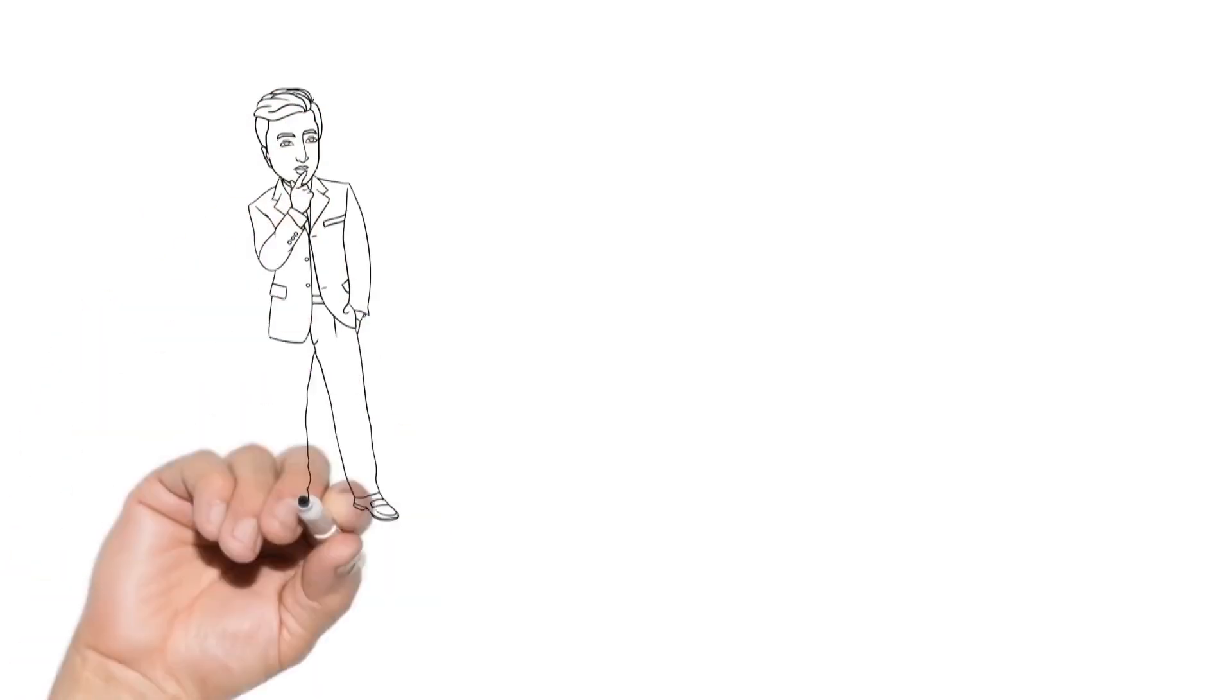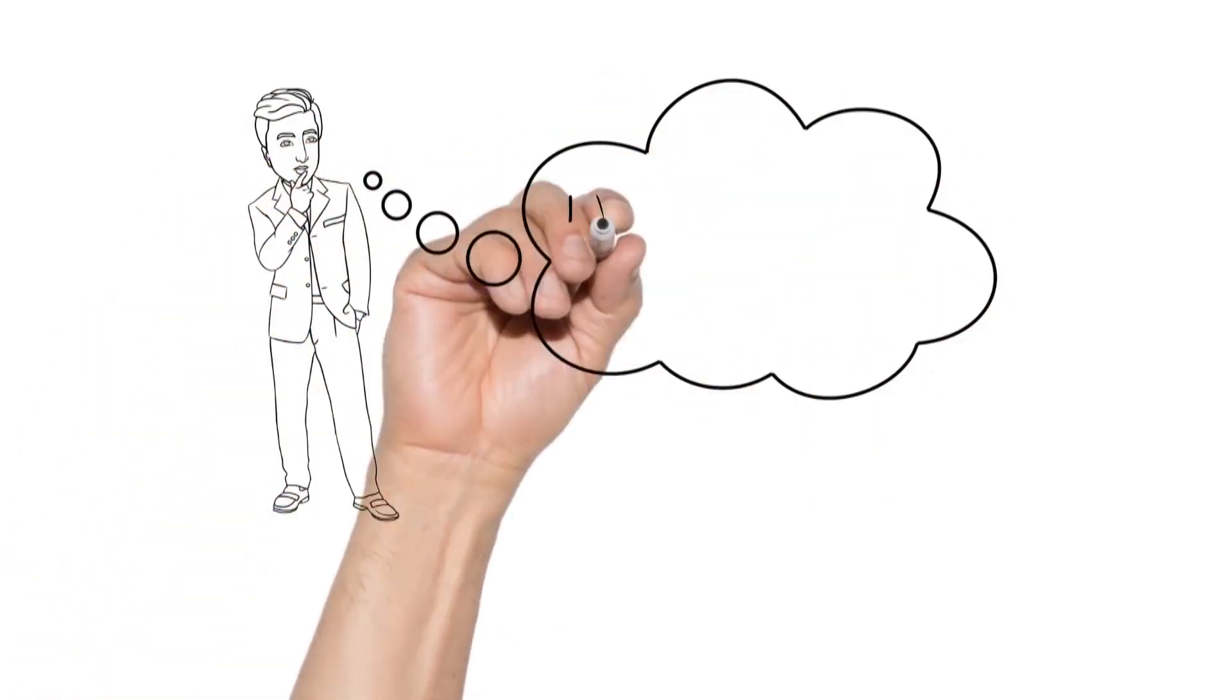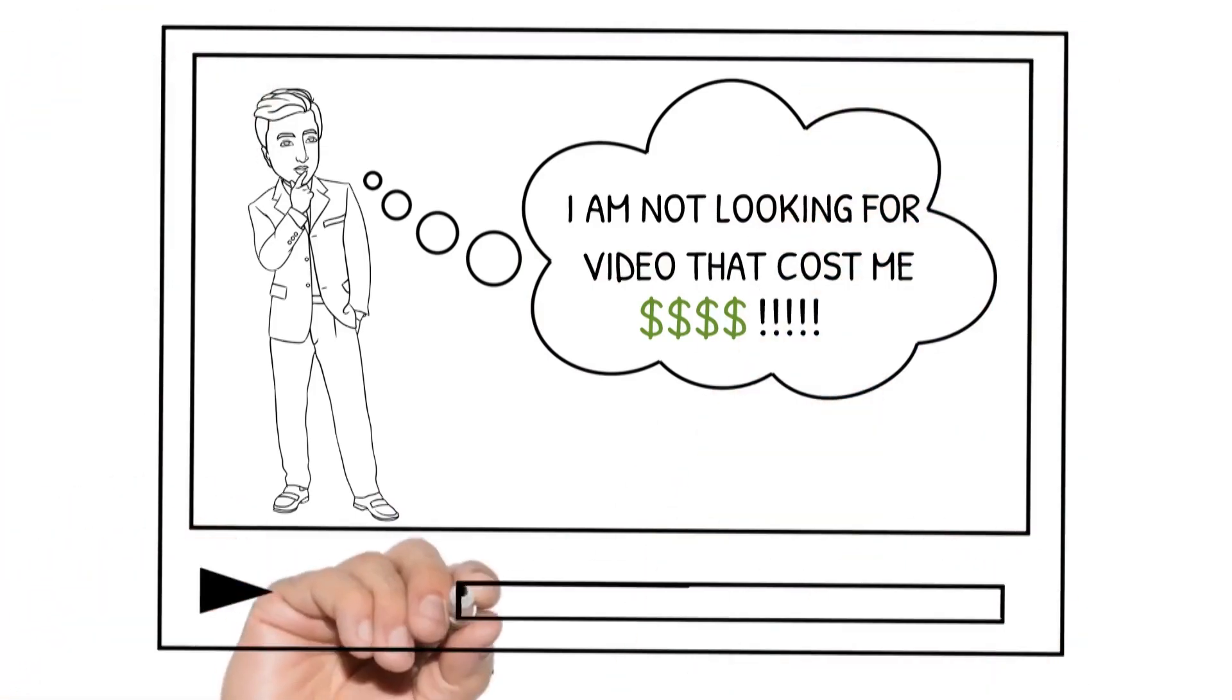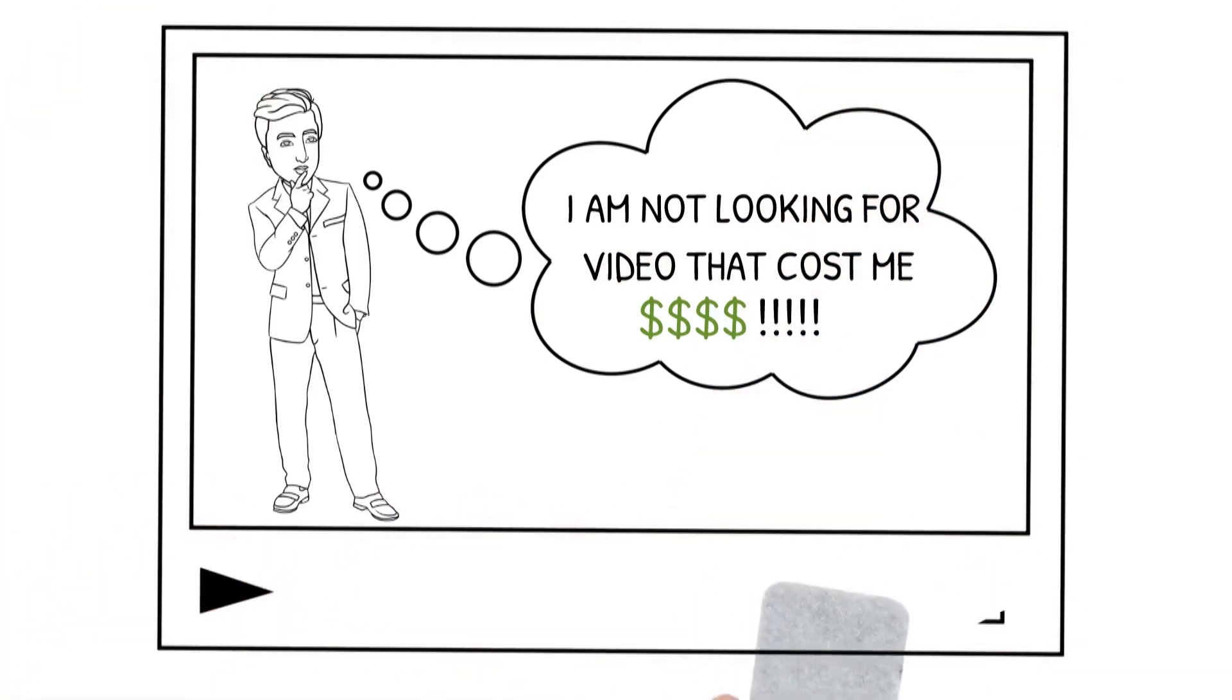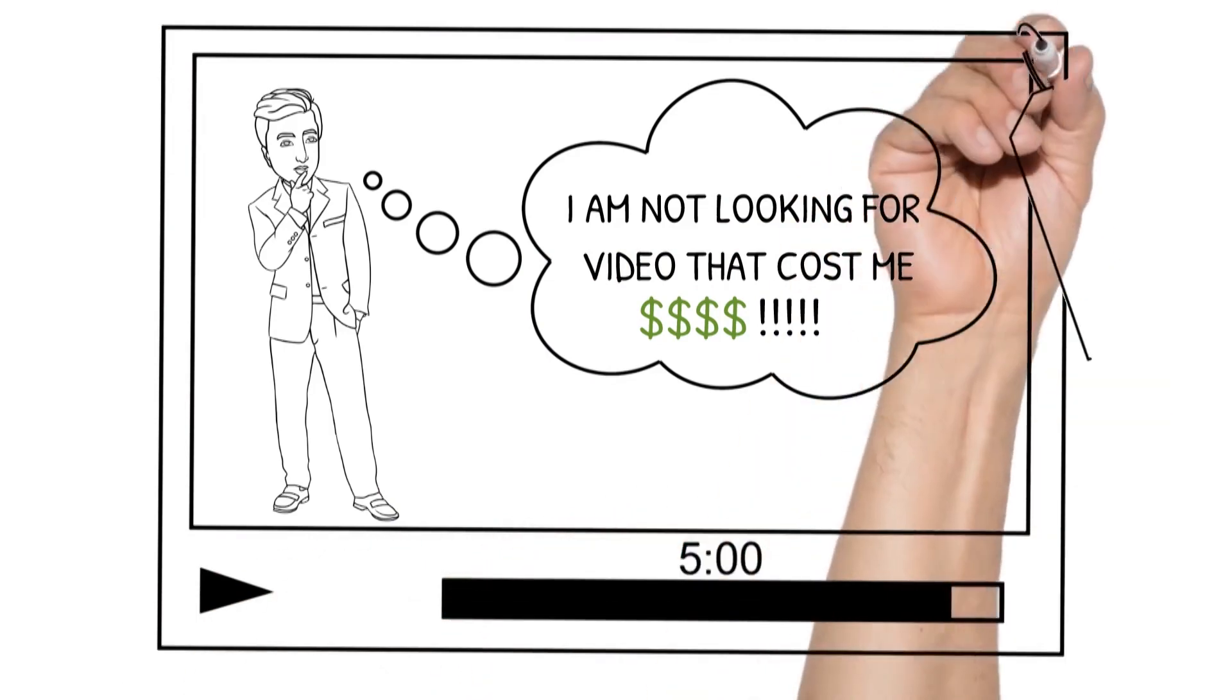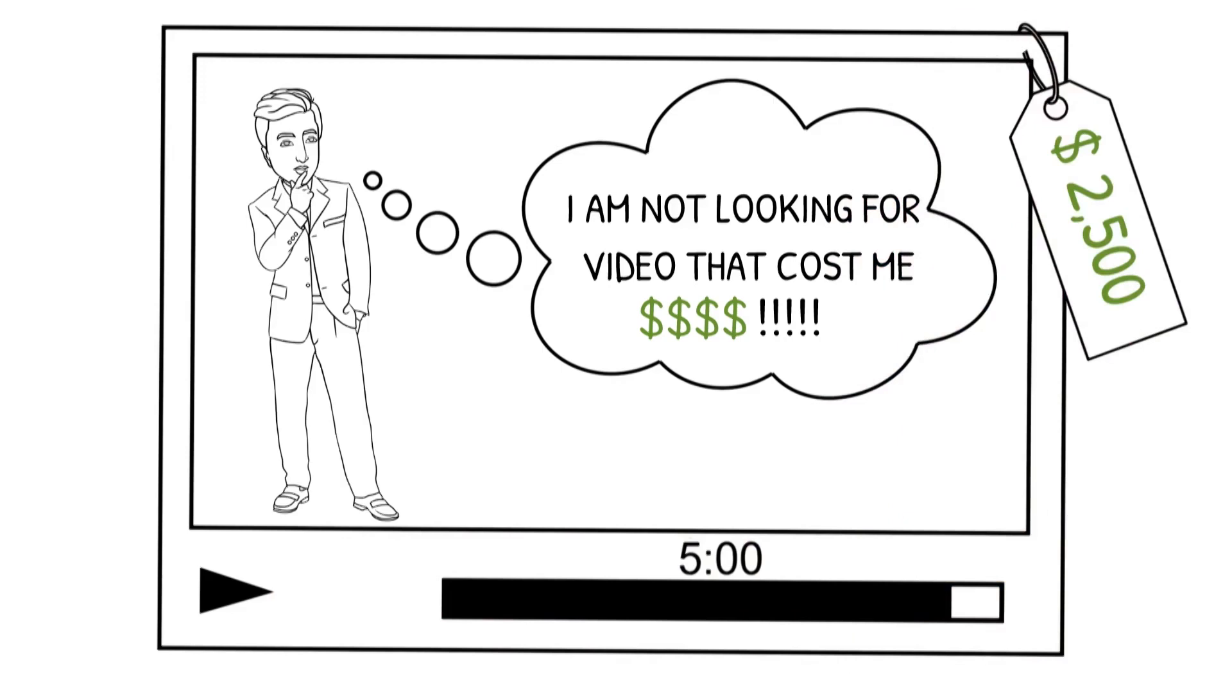Now, chances are you're here because you wanted to find a way to create doodle videos without spending $200 to $500 per minute of video. And let's face it, no video is just a minute long. The one you're watching right now is a hair over five minutes long, so it would cost you anywhere from $1,000 to $2,500 to get made. And it shouldn't be like that.